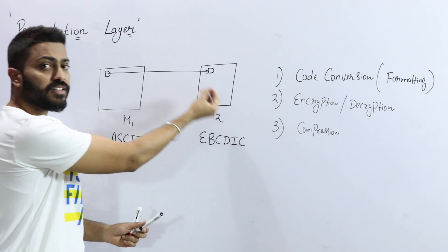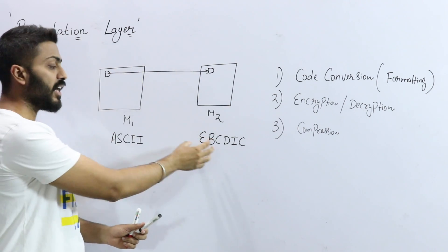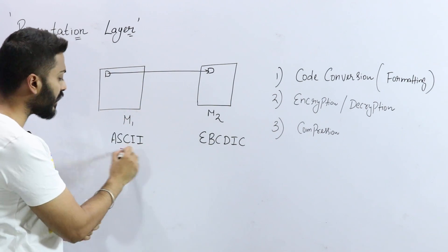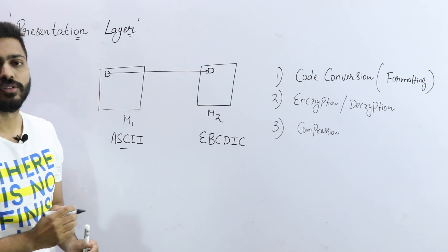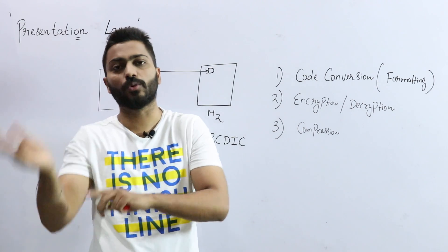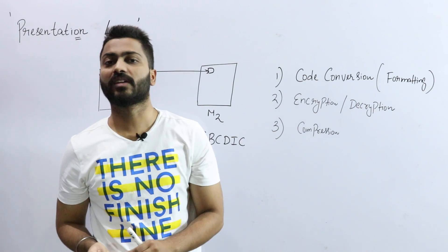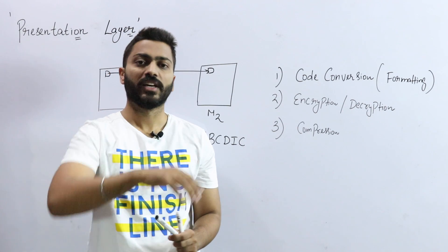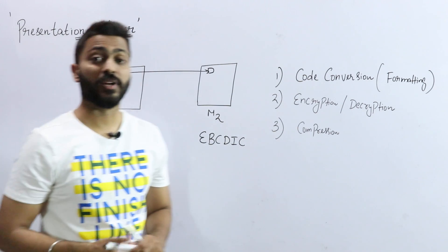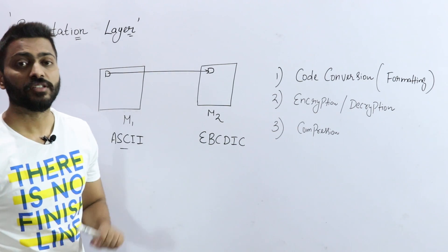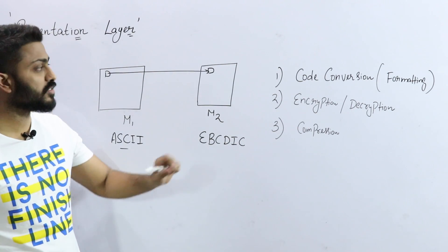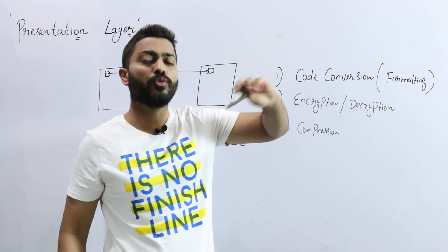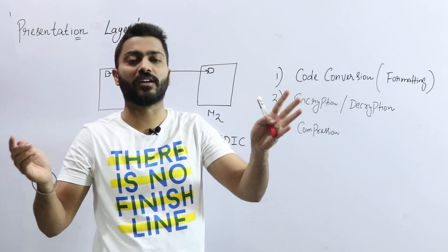And same in this case, if this machine is sending the data in AppCityCode but the other machine is understanding SkyCode, so how to convert AppCityCode to SkyCode or SkyCode to AppCityCode — for that the Presentation layer is used. This is the major responsibility of the Presentation layer: to format the data.